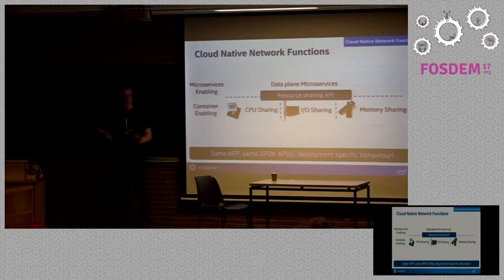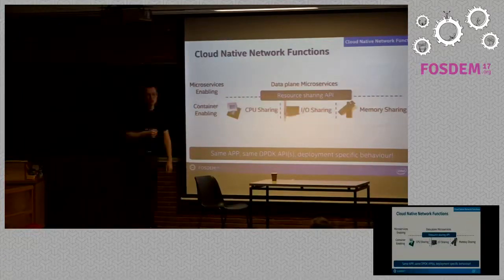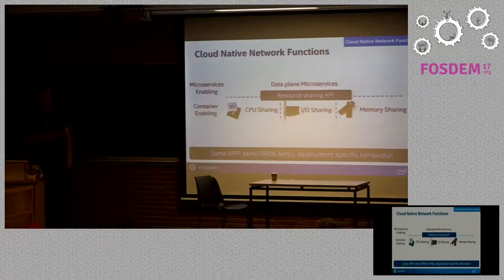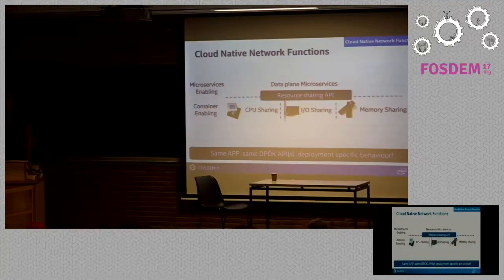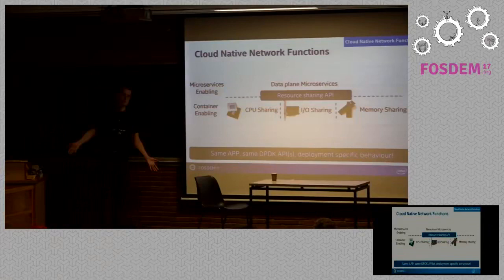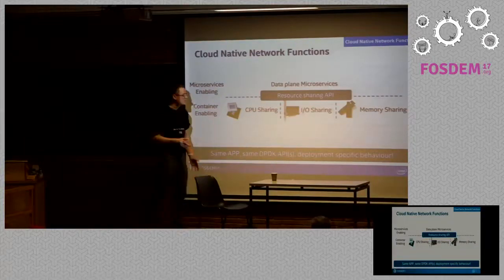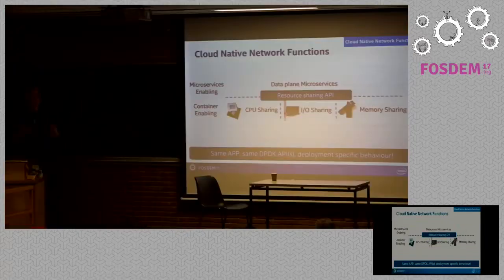That brings me to cloud-native. What I've just covered was how to strip your virtual network function of the VM and put it inside a container. But your network function's characteristics haven't changed at all — it still looks very similar to a network function deployed on a discrete appliance ten or fifteen years ago. It still owns all the IO, all the memory, and all the cores. My colleague Bruce Richardson describes these as greedy: they own large chunks of system resources and don't share well.